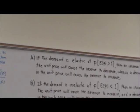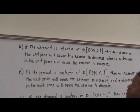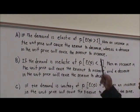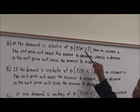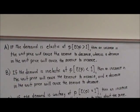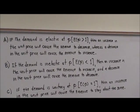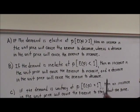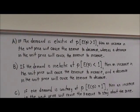If the demand is elastic at P and E of P is greater than one, then an increase in the unit price will cause the revenue to decrease, whereas a decrease in the unit price will cause the revenue to increase.